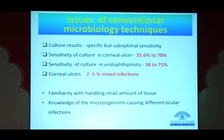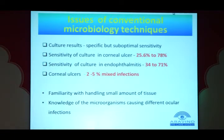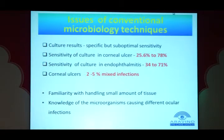Important statistics: in corneal ulcers, culture positivity ranges from 25 to 78% depending on the institute and region — ideally, 50% culture positivity indicates a good lab. In endophthalmitis, although guidelines suggest 70%, practically it is below 40%. Regarding mixed infection: if you get a high rate of mixed infection reports — for example, heavy staphylococcus growth alongside fungus — you should check the quantity and whether it grew at the site of the C-streak inoculation, to rule out contamination.